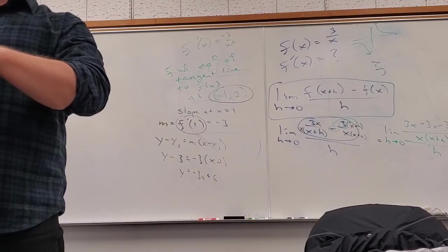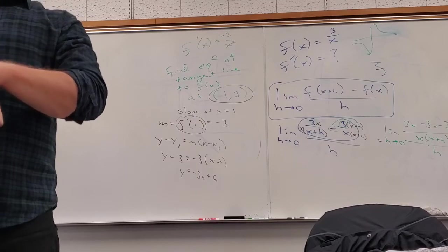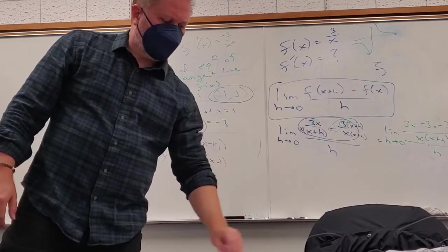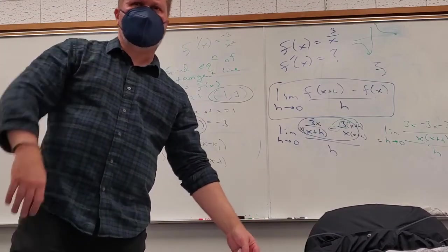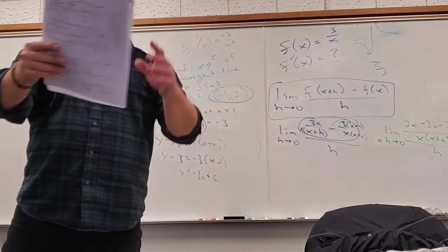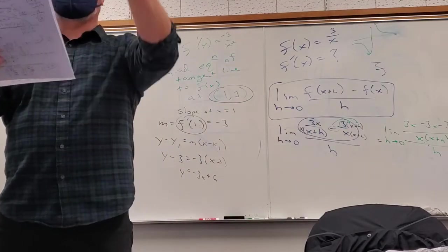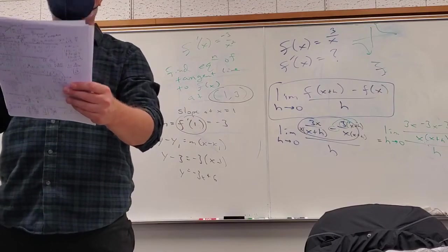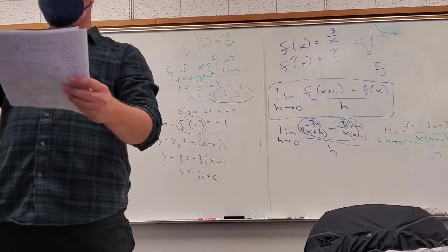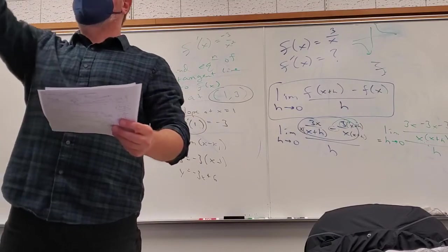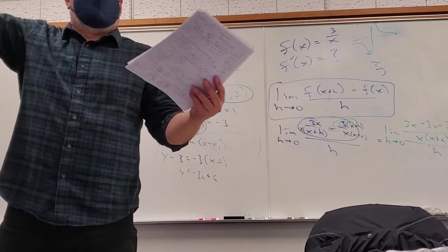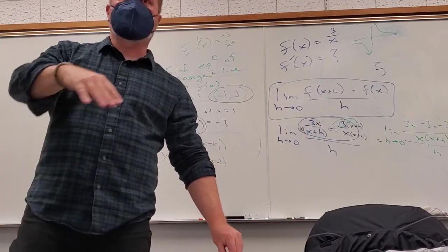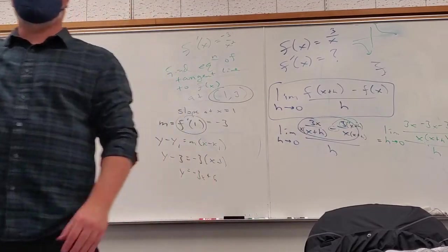A student asks if the test will be about the same length as the practice test. The instructor says it'll look similar — roughly 23 or 24 questions, counting A, B, C, D parts individually. The concepts on the practice test will be on the test, but there may be more. The instructor explicitly won't just change the numbers from the practice test.